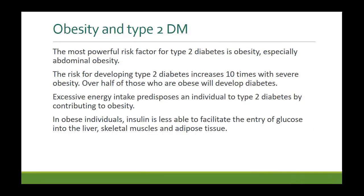Obesity and type two diabetes mellitus are very closely linked. The most powerful risk factor for type two diabetes is obesity, especially central or abdominal obesity. The risk of developing type two diabetes increases ten times with severe obesity, and over half of those who are obese will eventually develop diabetes. Excessive energy intake predisposes an individual to type two diabetes by contributing to obesity. In obese individuals, insulin is less able to facilitate the entry of glucose into the liver, skeletal muscles, and adipose tissue. When these people lose weight, insulin resistance actually decreases and insulin can act on the target cells.